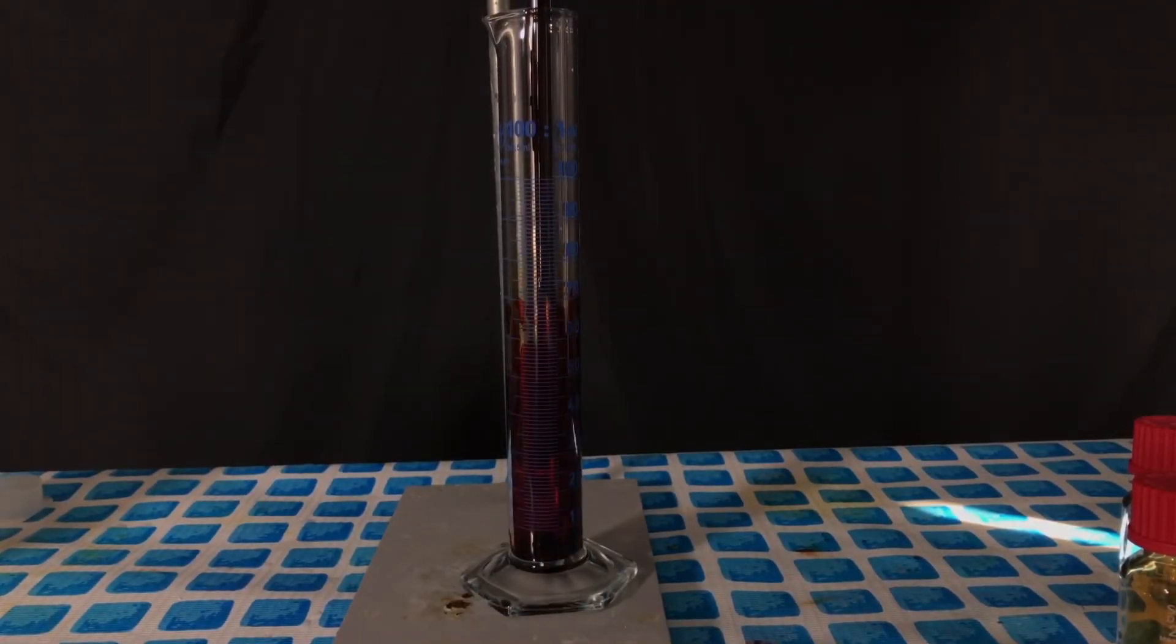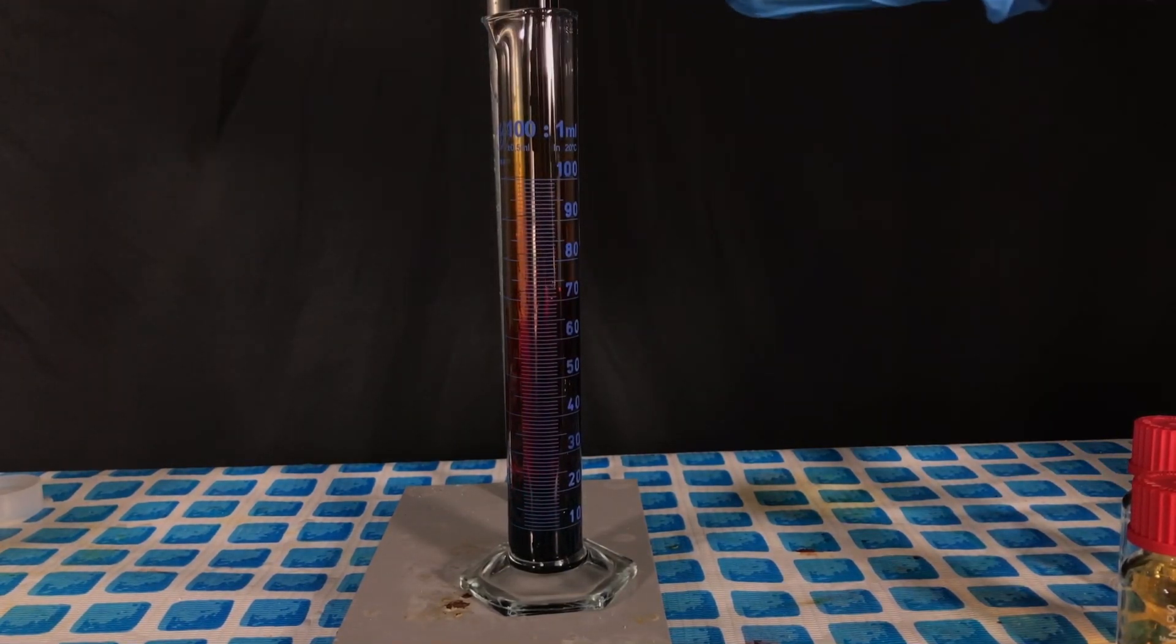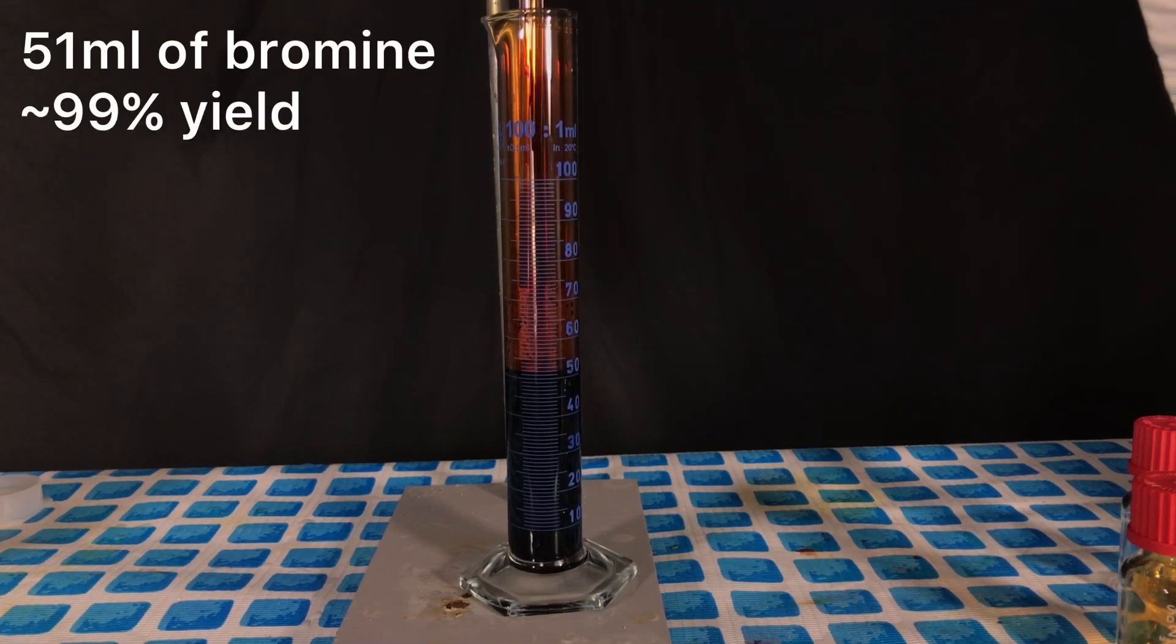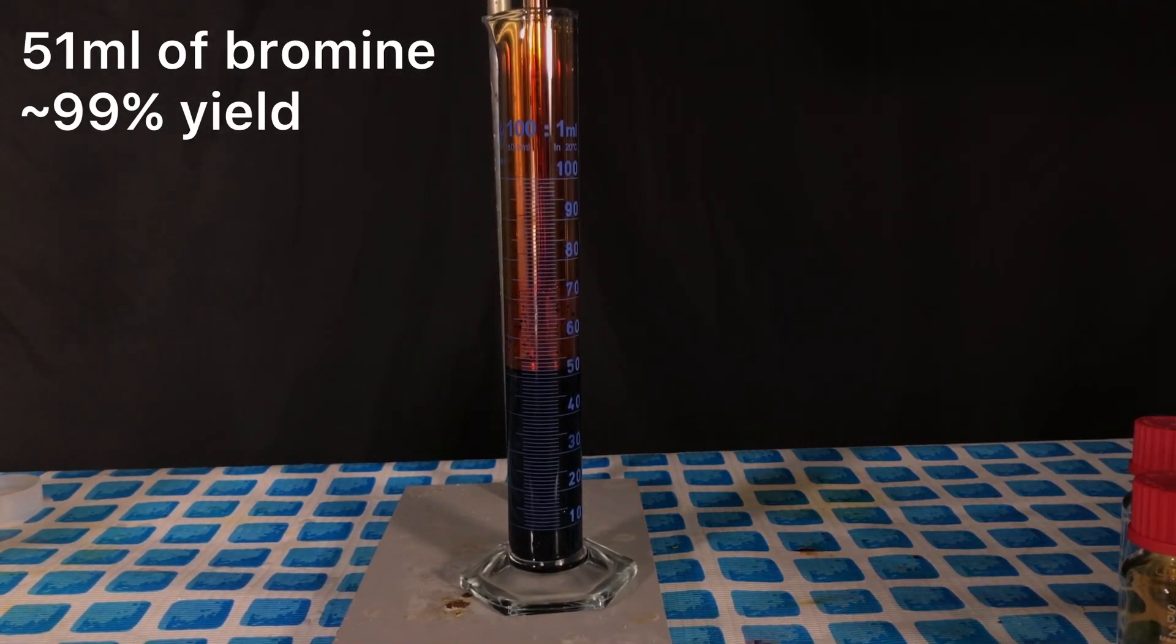To determine the yields the bromine was transferred to a measuring cylinder. The sulfuric acid layer, with the sulfuric acid being less dense than bromine, was left behind in a separatory funnel. We collected 51 ml of bromine. This corresponds to around 159 grams of elemental bromine, which is approximately a 99% yield.